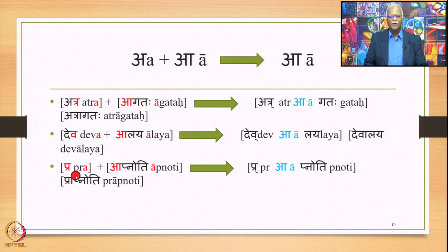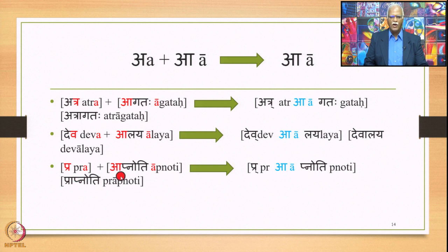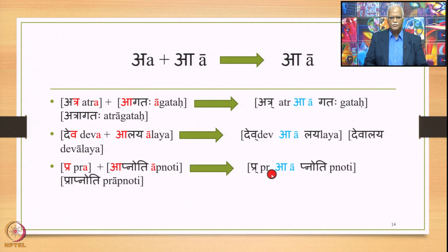For a preverb plus verb combination: pra plus āp — pra ends in short A followed by long A. Since upasarga plus dhatu requires obligatory Samhita, 6.1.101 applies and substitutes one long A in place of both, giving 'prāpnoti' as the output.